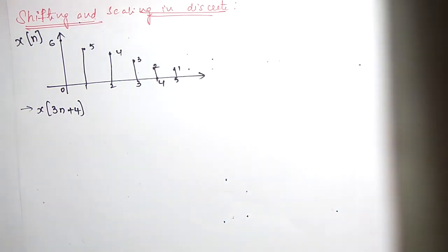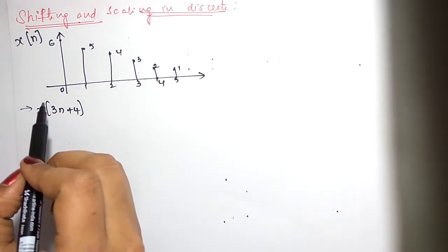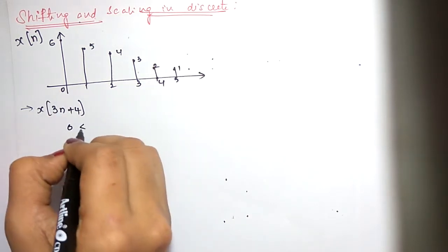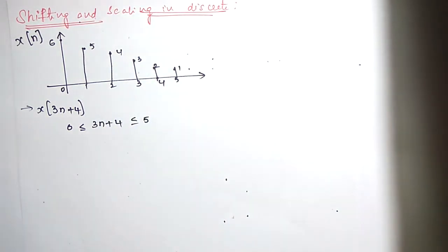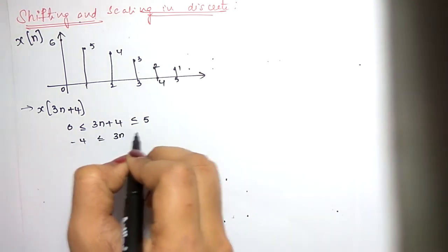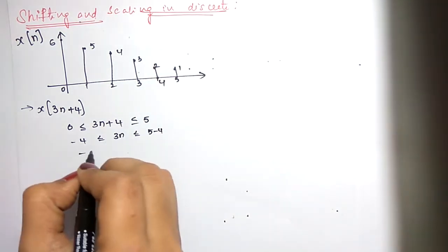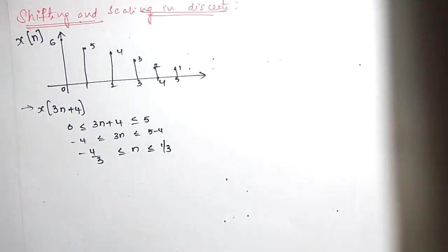So how to do this? We can follow the same procedure. As you know, in the starting case n lies between 0 to 5, so your 3n plus 4 should lie between 0 to 5. So minus 4 less than or equal to 3n less than or equal to 1. Next step: minus 4 by 3 less than or equal to n less than or equal to 1 by 3.